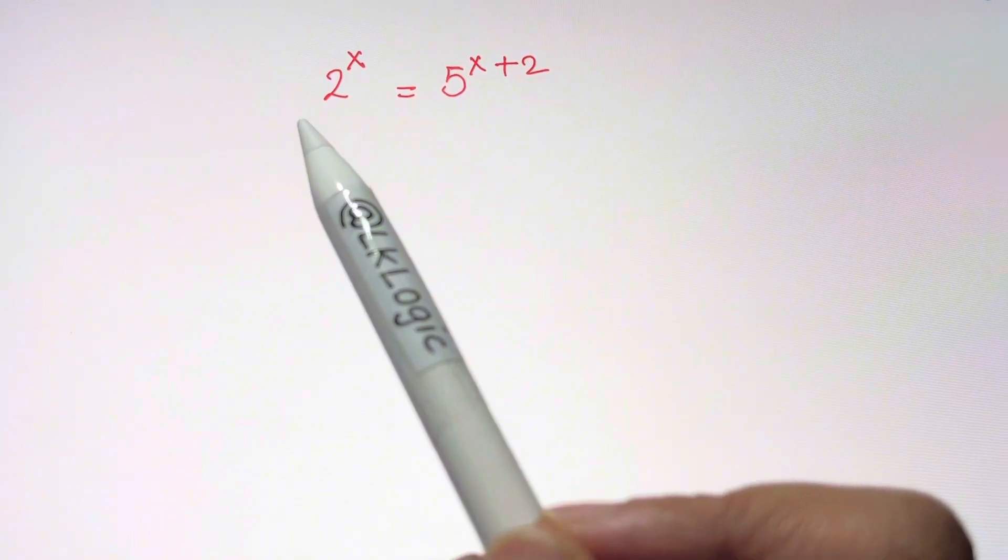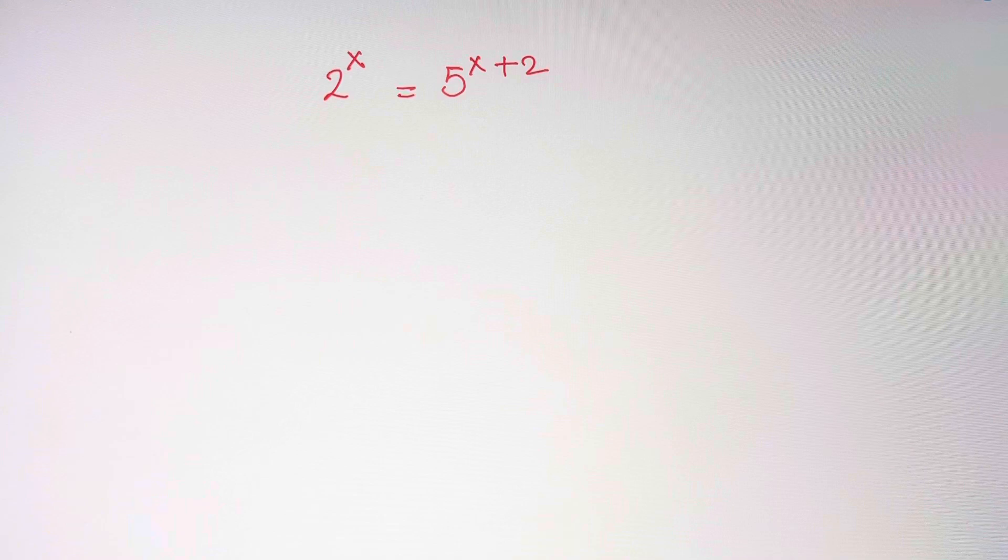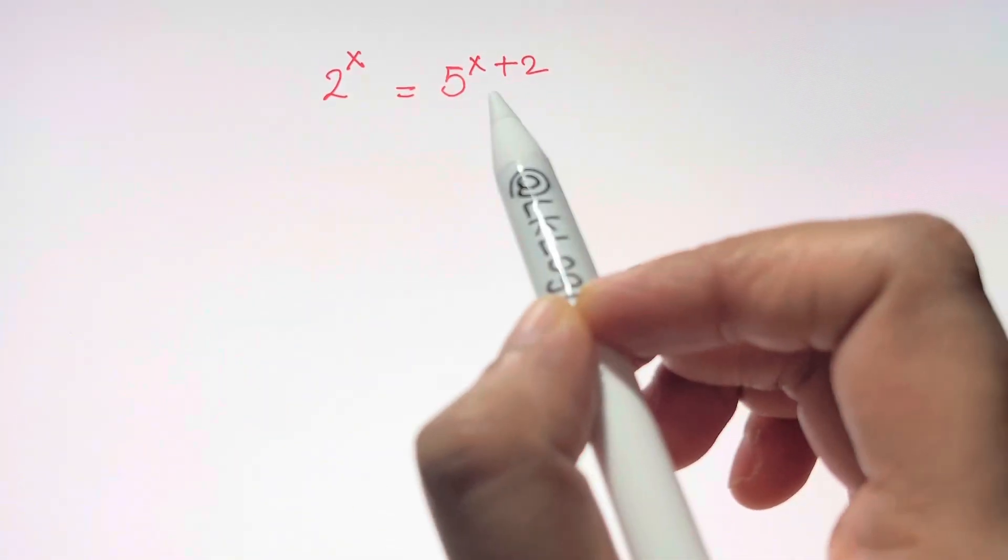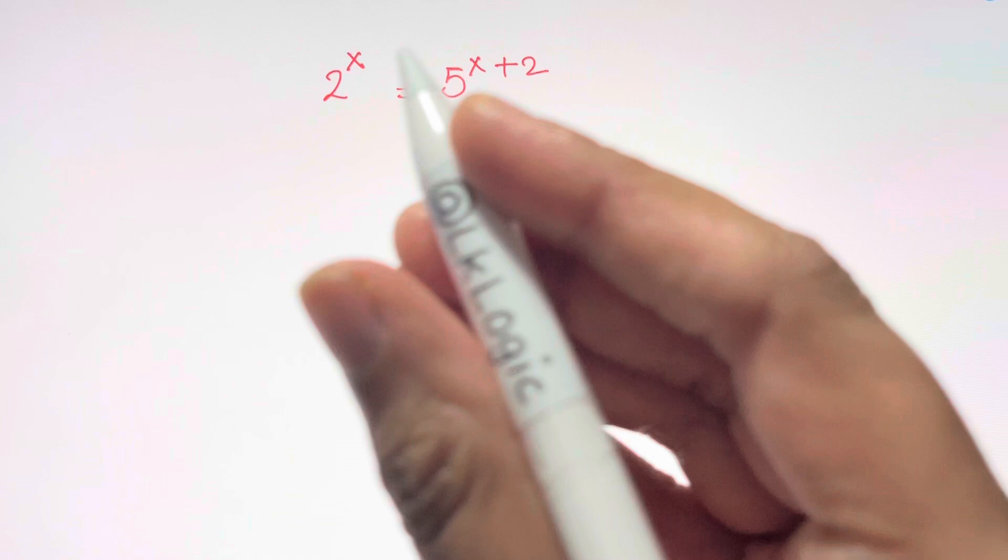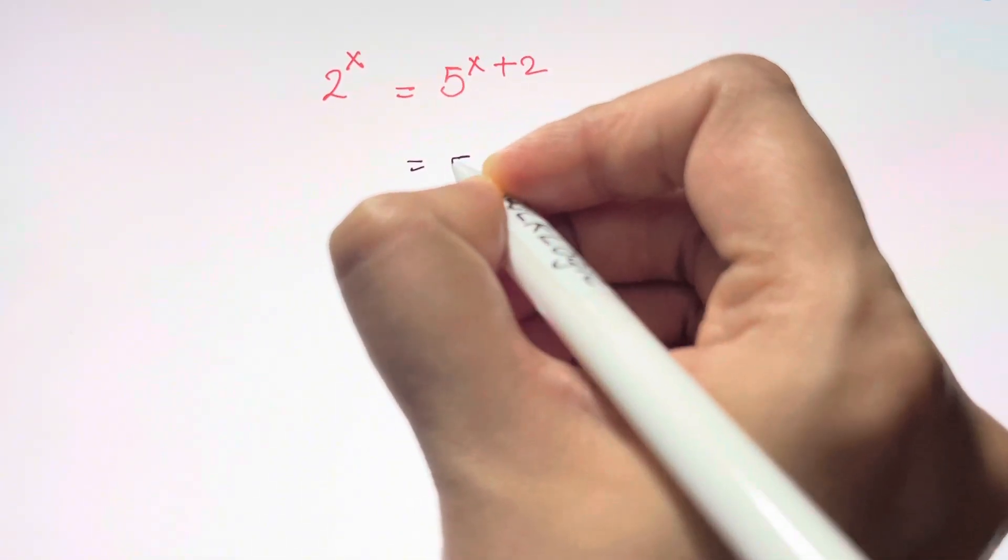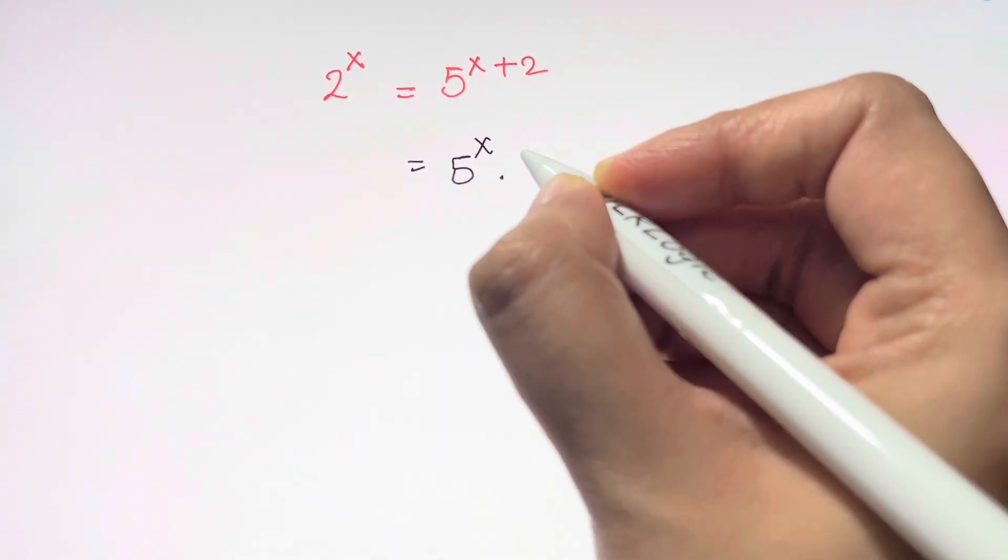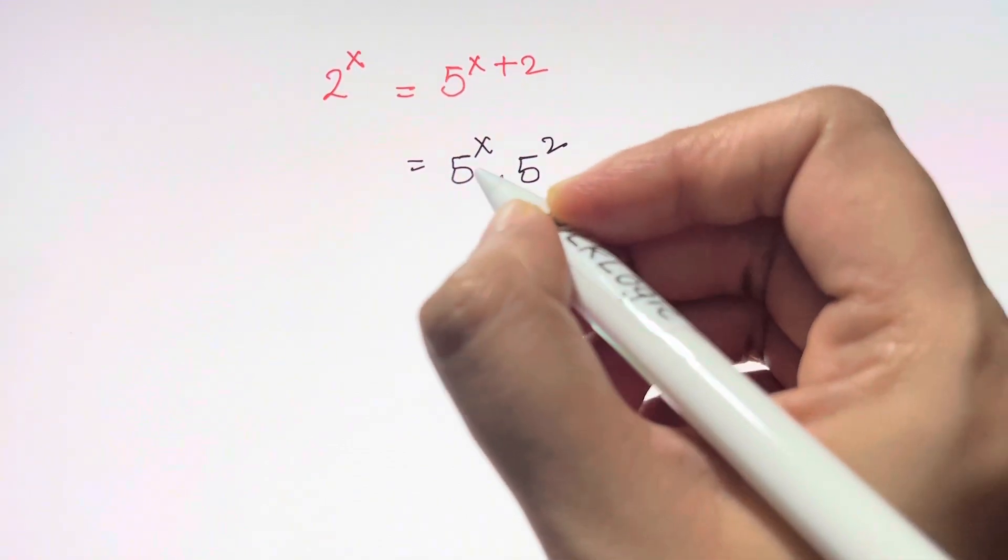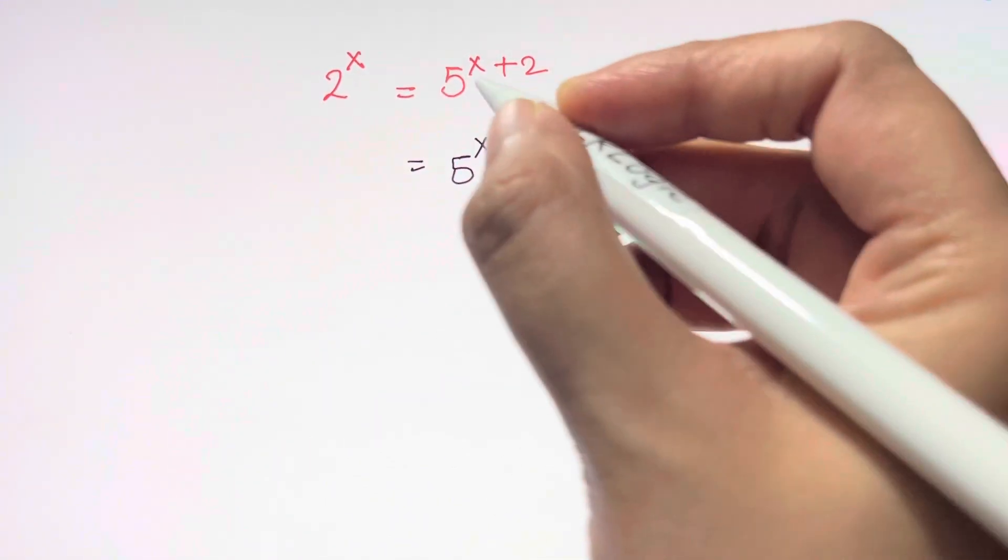For that, before doing that, we need to split this term. This term here can be rewritten as 5^x times 5^2. Now this is law of exponents: bases are same, there's multiplication, you add the powers.